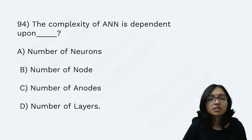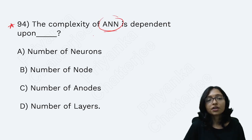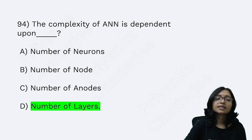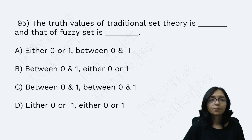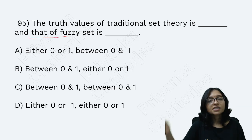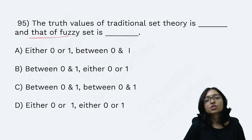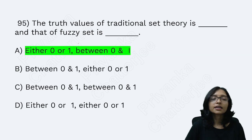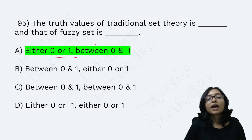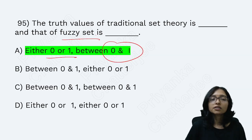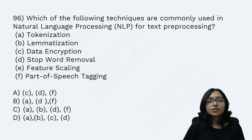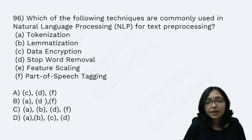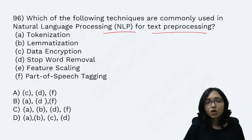This is a very popular question on Artificial Neural Networks (ANN): what does it depend on? It depends on the number of layers — as you increase the number of layers, complexity increases. This question has been repeated from CG SET PYQs. For set theory: crisp sets have values either 0 or 1, while fuzzy sets have values between 0 and 1.